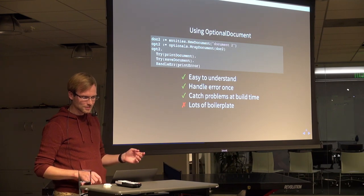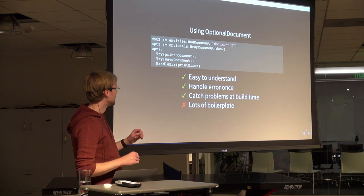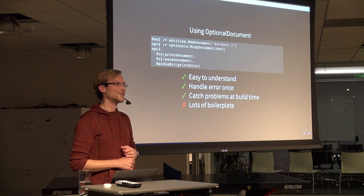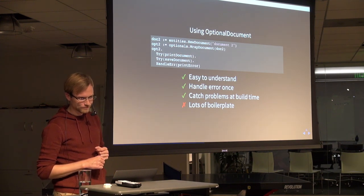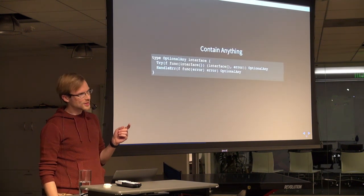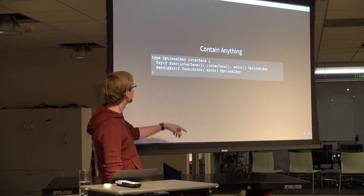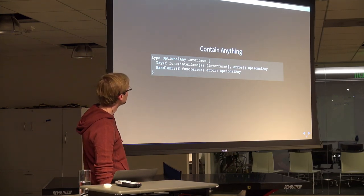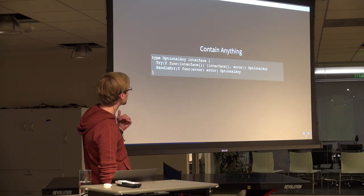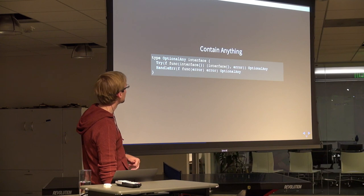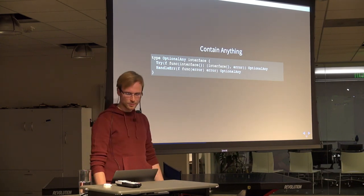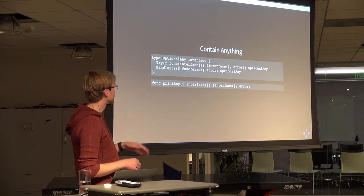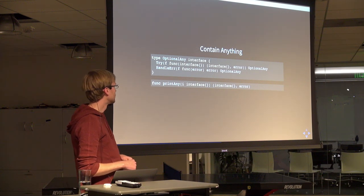So maybe I'm not done yet — I'm going to keep iterating on this. What else can we do? How can I change that boilerplate? Let's try this: this is basically the same thing — optional anything — and I'm just using empty interfaces instead of a specific type. It still works exactly the same way. It saves a value, which is an empty interface. It calls a function you pass into try. If anything in there returns an error, then you call handle error on it.